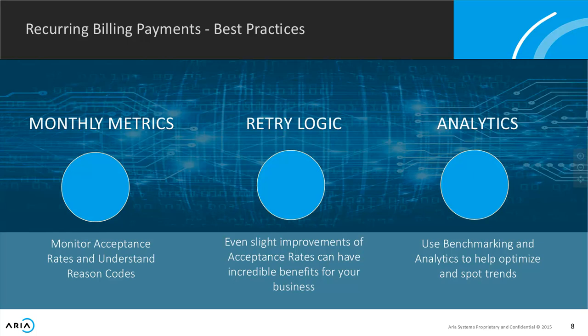From that information, they move to retry logic — looking at acceptance rates and identifying transactions they may want to retry. Keeley will get into more detail about what Chase looks at from a best practice perspective. Starting with monthly or even weekly metrics, depending on the size of your business, you understand what transactions you might want to retry, what pace to do that, and then use analytics and data to benchmark, optimize, and spot trends.